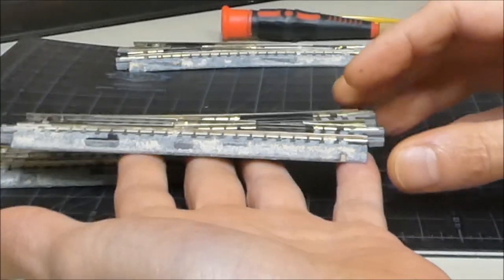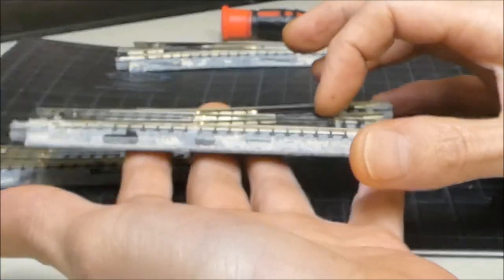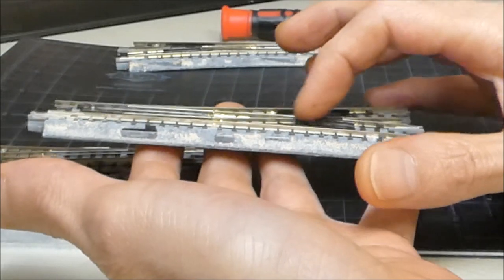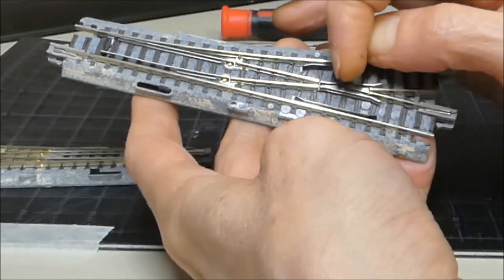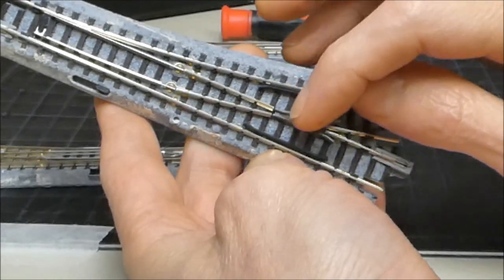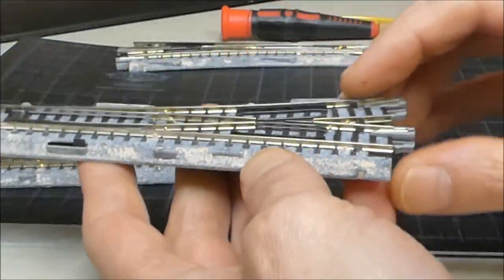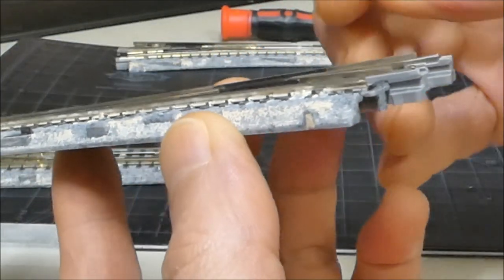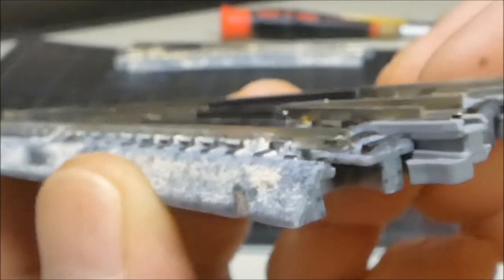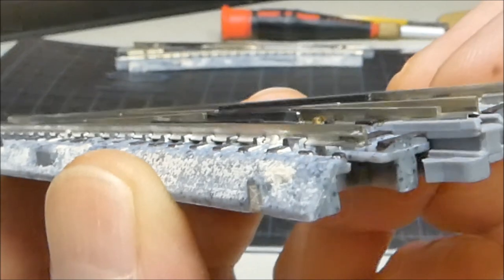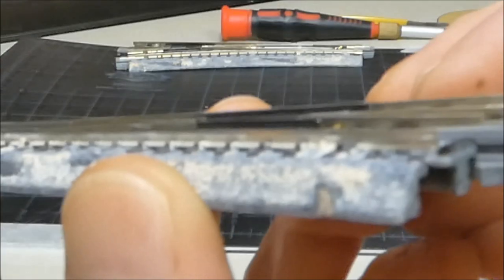One of the things I found that's a real issue with these is that the frog is not level when you get them out of the box. A lot of times this narrower end of the frog here is low. You can see how those chrome rails, the steel colored rails, are higher than the frog.